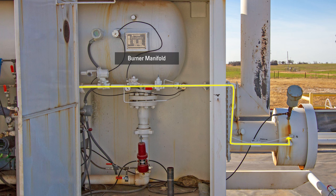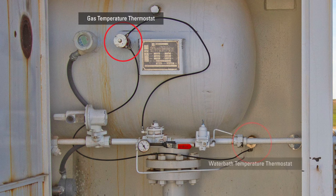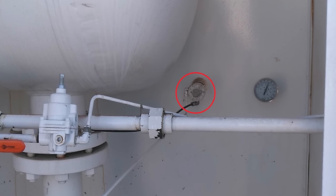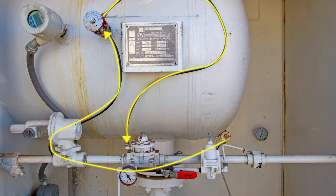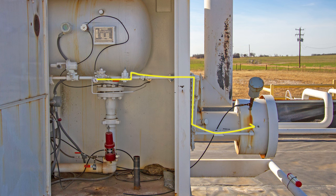This system is the burner manifold with two Kimray thermostats and one burner valve. One thermostat is monitoring gas temperature, the other monitors water bath temperature. If the set point of either thermostat is reached, gas going to the burner valve is shut off. The small tubing line coming off the burner valve supplies gas to the standing pilot light located in the flame arrester.